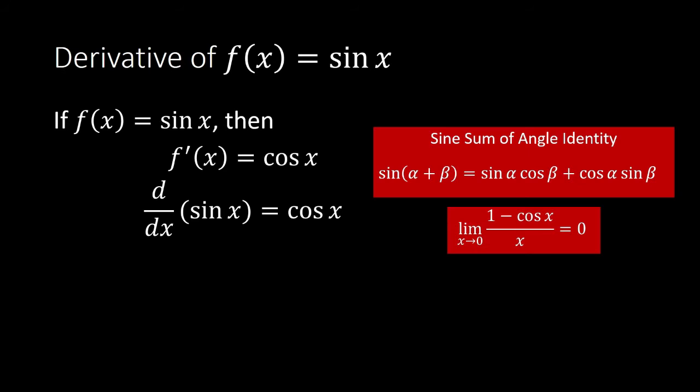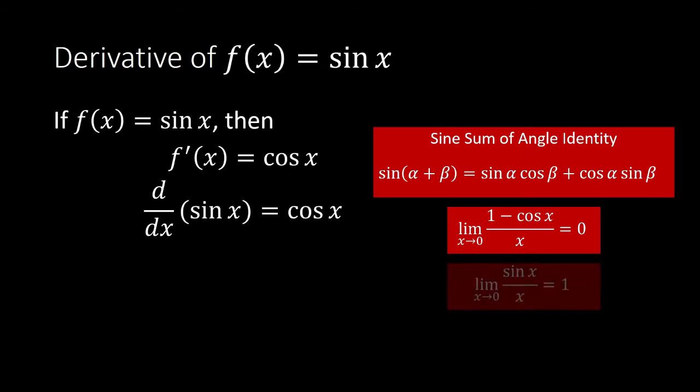We will also need two results from limits. The limit of (1 − cos x) / x as x approaches 0 is 0. This falls under indeterminate forms — direct substitution gives 0/0 — but we showed the limit equals 0. We will also need: the limit of sin(x) / x as x approaches 0 is equal to 1.